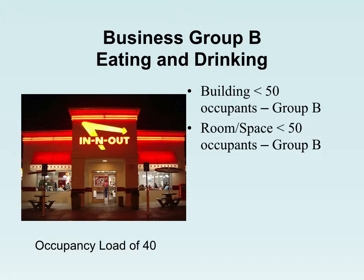Now let's clarify the difference between A and B. If an occupancy meets the definition of an A but has 49 or fewer people, it's a B. If it's 50 or more, it's an A. A smaller In-N-Out that doesn't serve 50 or more people is just a B; one that serves 55 people is an A. One way to tell if a restaurant is A or B: if they have 50 or more, they're required by code to post the occupant load on a visible sign.